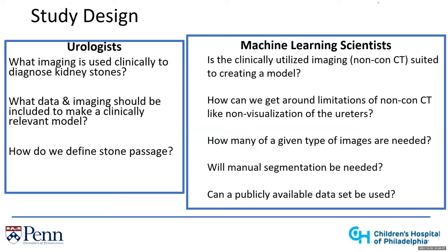Starting with study design — as urologists, I'm thinking about the imaging most often used clinically to diagnose kidney stones, which is non-contrast CT scans, and what data and imaging we should include in a model to make it clinically relevant. Things like the size of our patient, their history of kidney stones, what medications they're on, and also how we define stone passage — is that defined by an imaging outcome or by the patient presenting to your clinic with a stone in their hand?